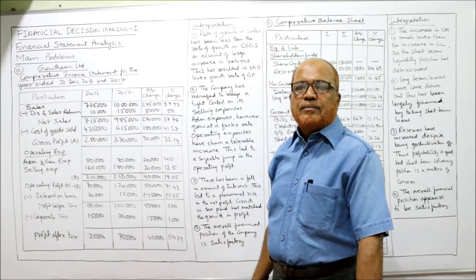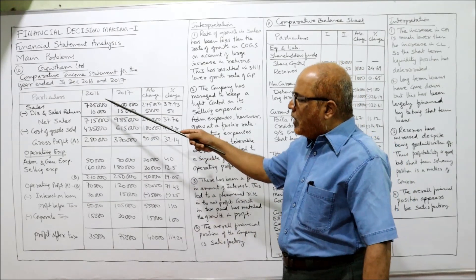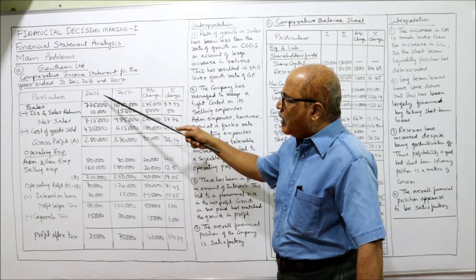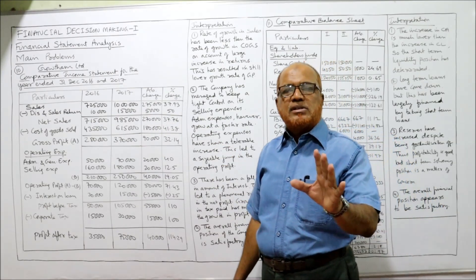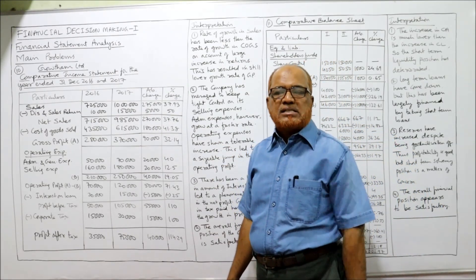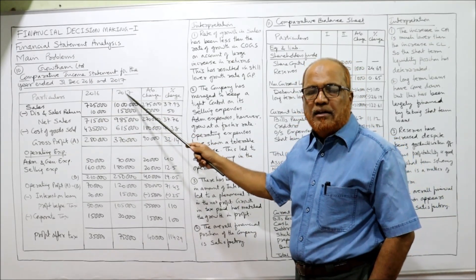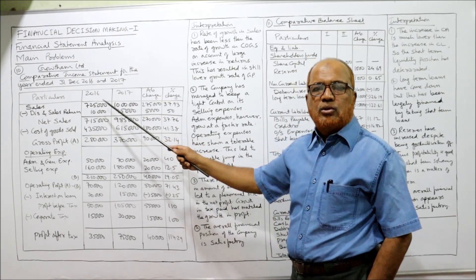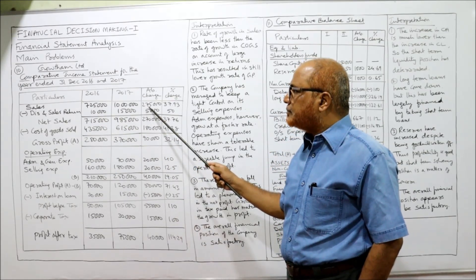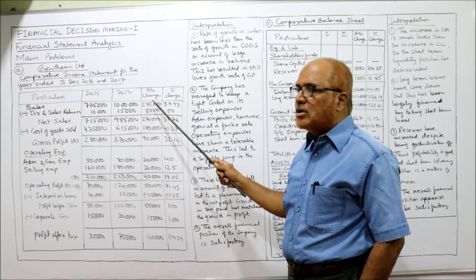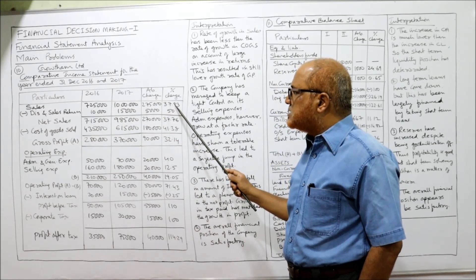This is the format for comparative analysis. Take all values for 2016 and 2017 from the problem. The formula for absolute change is: current year minus last year — current year is 2017, last year is 2016. So 10 lakhs minus 7 lakhs 25 thousand gives 2 lakhs 75 thousand. Then 2,75,000 divided by 7,25,000 multiplied by 100 gives 37.93 percent.